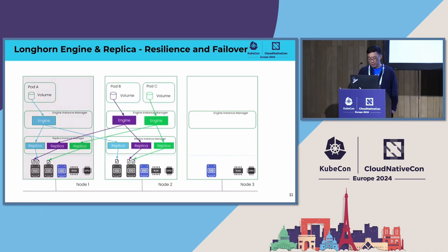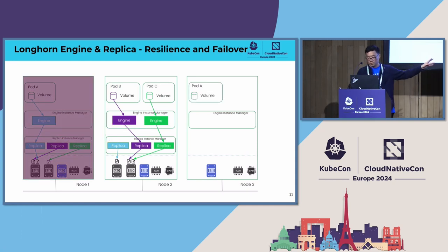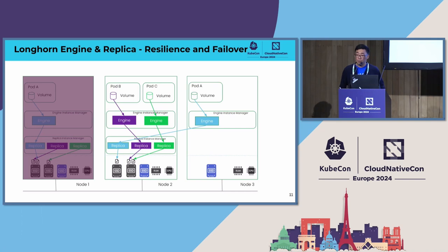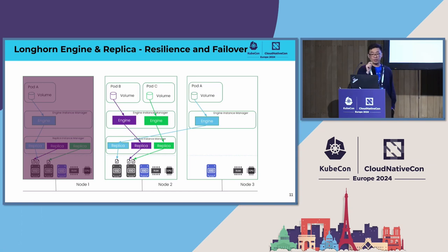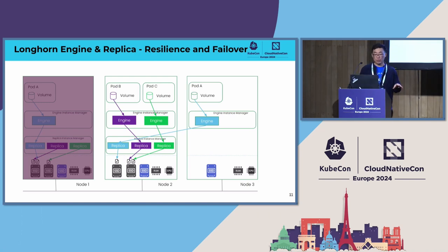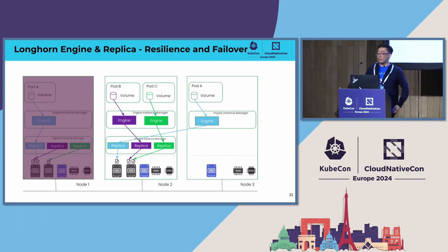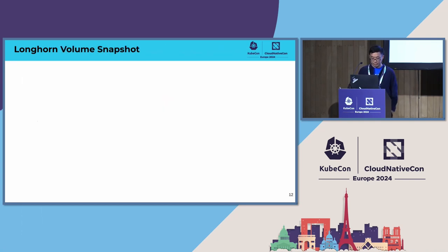When a node goes down, a new pod running on another node can create the engine and connect to the existing replicas. But the number of replicas decreases — originally three, now two. Longhorn has a node down timeout configuration, configurable per volume or globally. Longhorn will not immediately rebuild the replica, because the node might come back due to maintenance. If you exceed the timeout, then it rebuilds. This also handles involuntary node reboots.